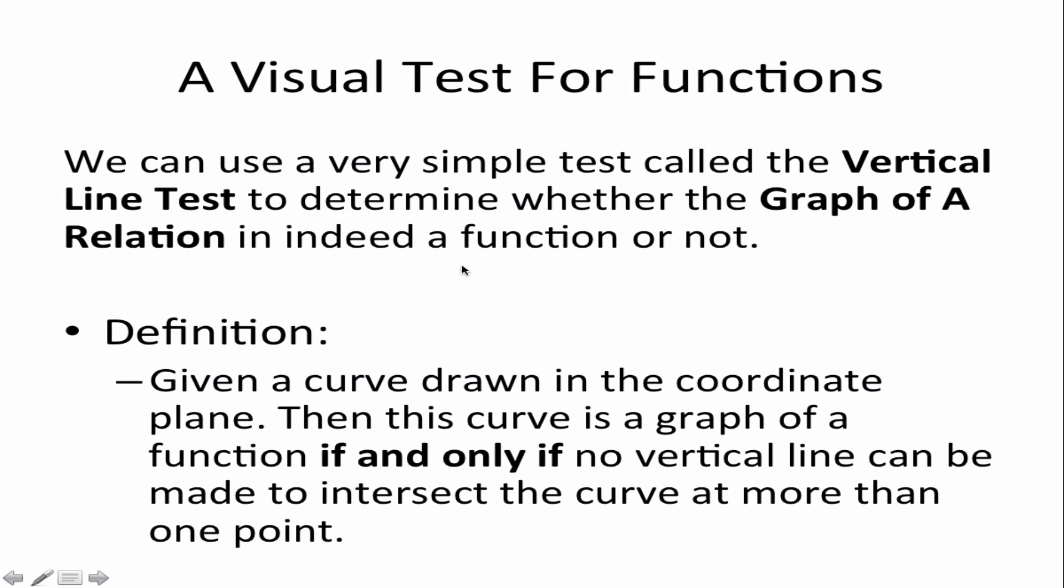All right we're soon wrapping up. How to test for functions? Well the simplest test for a function is something called the vertical line test. Whenever you have a graph of a relation you can use this test to determine whether it is a function or not. The definition: given a curve drawn in the coordinate plane, this curve is a graph of a function if and only if no vertical line can be made to intersect the curve at more than one point.